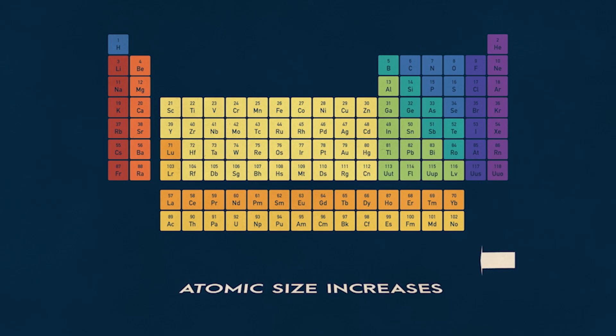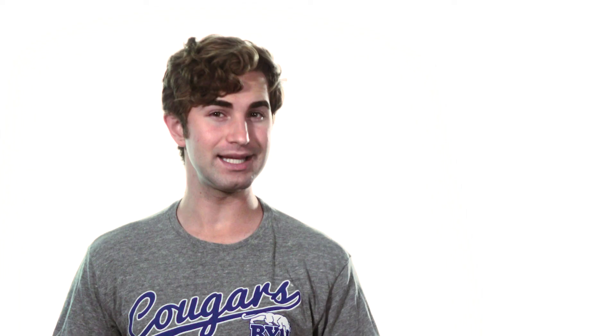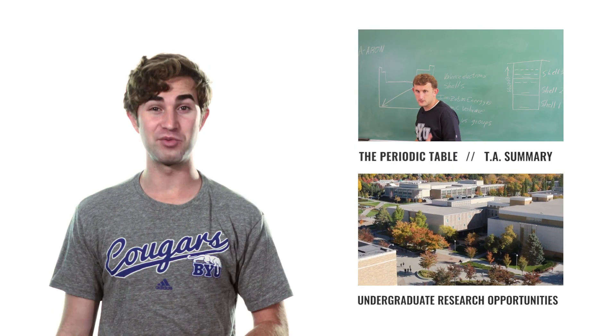Atomic size or volume increases in the opposite direction. Helium takes up the least amount of space, while francium, which hasn't been measured yet, is expected to take up the most. Just to be clear, that doesn't mean larger atoms have more mass than other atoms. Atomic mass is different than atomic size. When we say an atom is large, we're just saying its outer electron shell takes up more space.